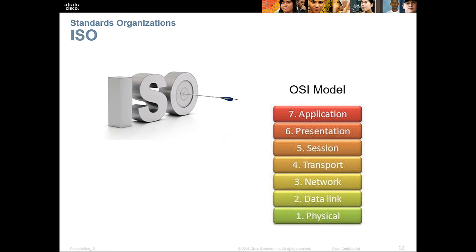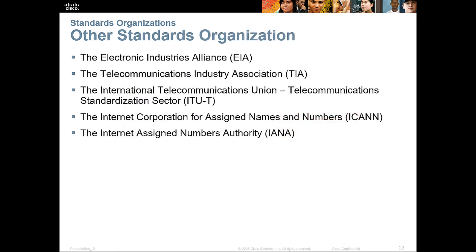ISO is responsible for the OSI model. ISO stands for International Standard Organization. We also have EIA and TIA, ITU, ICANN, and IANA. ICANN is the Internet Corporation for Assigned Names and Numbers. IANA mainly deals with the Assigned Number Authority.